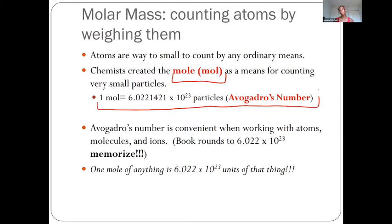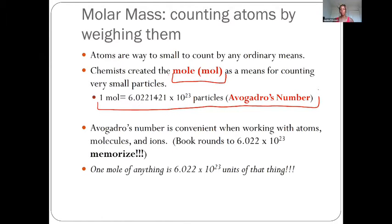Just like when we say we have a dozen of anything — a dozen cars, a dozen shoes, a dozen houses — all means 12. Anytime we say we have a mole of something, that means we have 6.022 times 10 to the 23rd of that thing. Just because we have a dozen eggs or a dozen shoes doesn't mean the mass is the same — it varies based on the material. The same thing happens with atoms: the mass will vary based on the atomic mass of the substance.